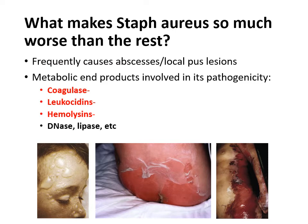Staph infections can get quite nasty — vesicles and bullae with bubbling of the skin, breakdown of the outer skin, or toxic shock syndrome where bacteria travel throughout the blood causing dangerous, potentially fatal issues. You might ask why staph aureus can do so much more damage than saprophyticus or epidermidis.